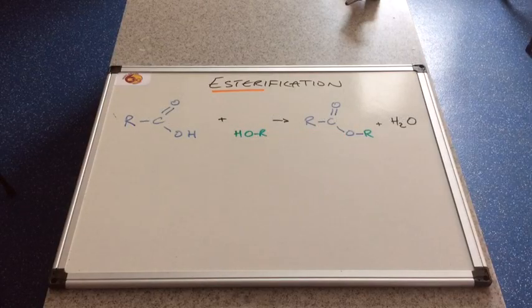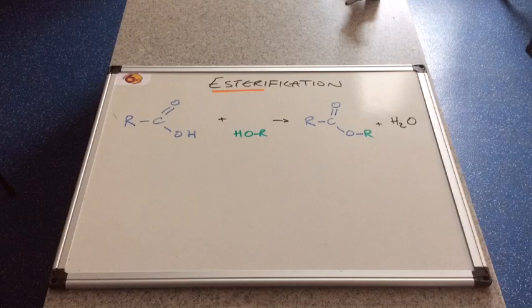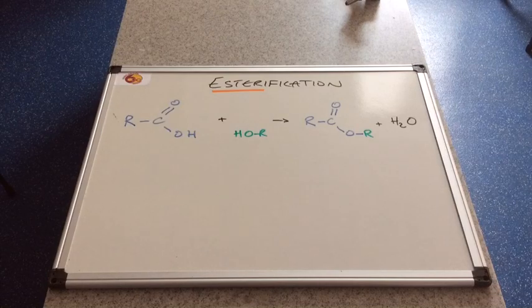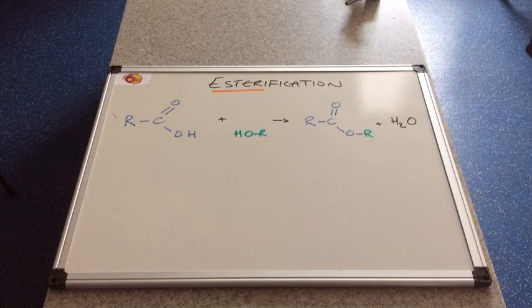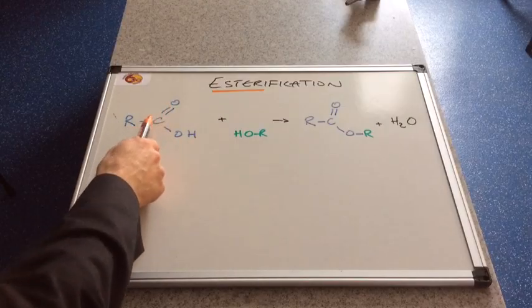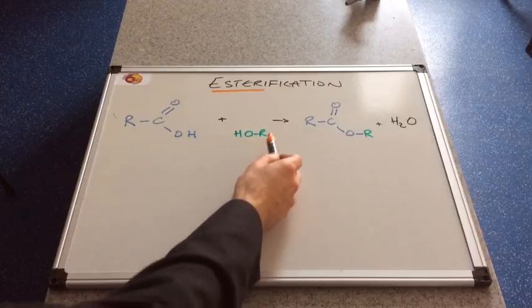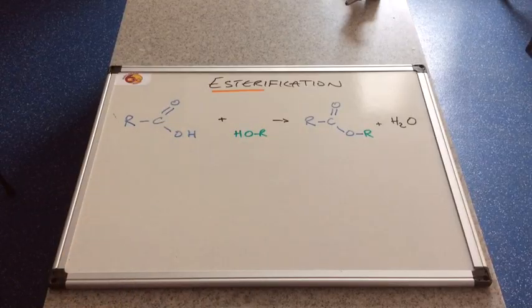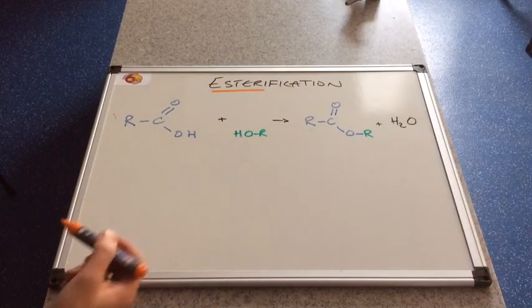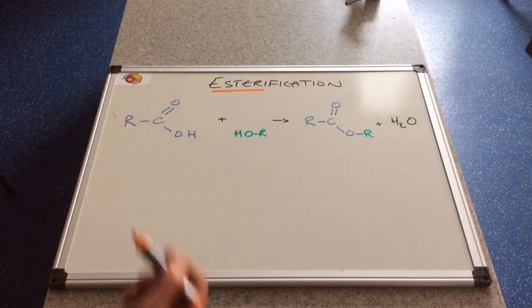Still with general formulae but now the more displayed formulae so you can see the structure, the bonds at play. We've got the general carboxylic acid here, our C double bond O, single bond O, H. And I've drawn the alcohol backwards because it's going to help us to sort of identify the water molecule.